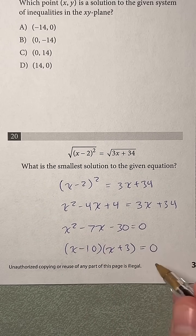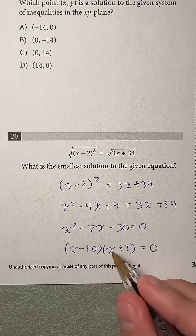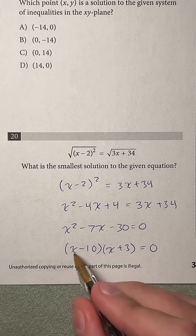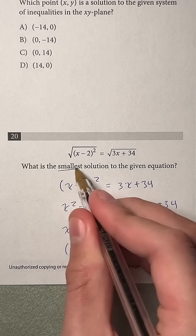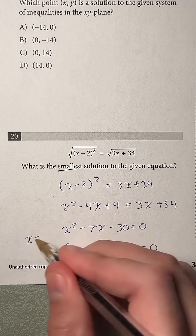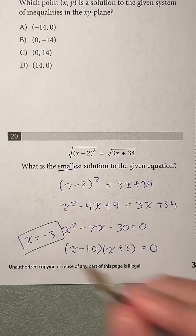And then once again, that equals 0. So having these factors, our solutions are going to be x equals 10 and x equals negative 3. So the smallest solution is going to be x equals negative 3. And that's our answer.